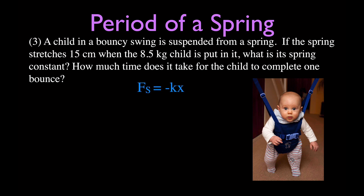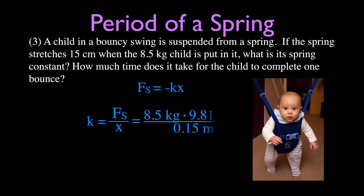We'll find the spring constant using Hooke's law: F equals negative k times x. We're not given the force directly, but we can calculate it from the mass using Newton's second law: F equals m times g. We solve for k: it's the force divided by the distance. The distance must be in meters, not centimeters. So k equals (8.5 × 9.81) divided by 0.15, which gives a spring constant of 556 newtons per meter.